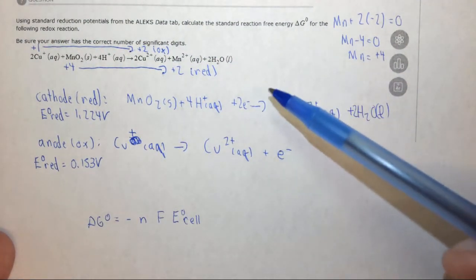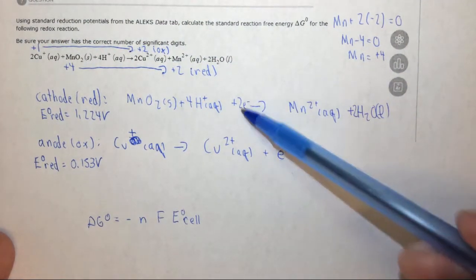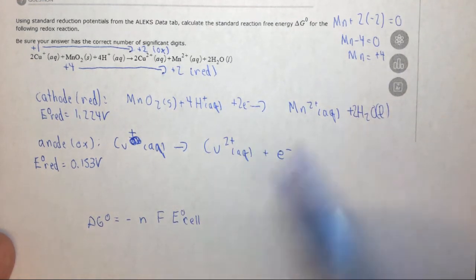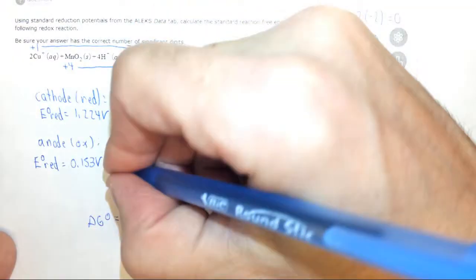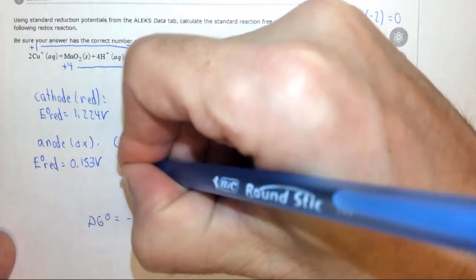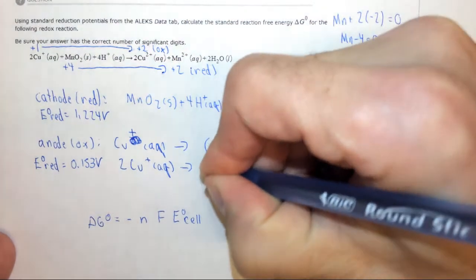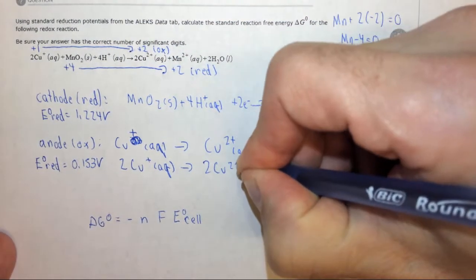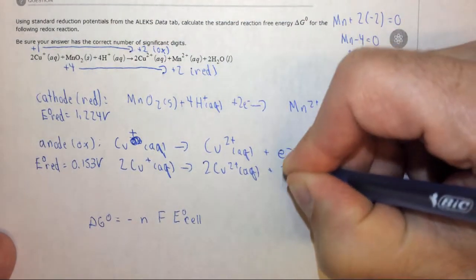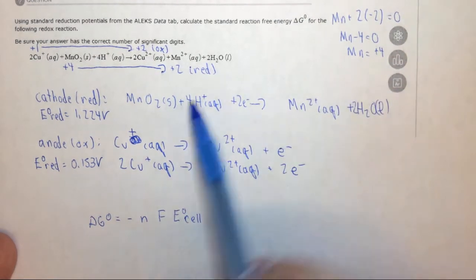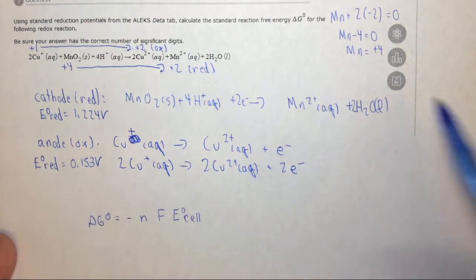But you'll notice, in order to have the overall reaction work, we need to cancel out the electrons. So if we have two electrons here, we need to have two electrons here. Said another way, we need to double everything. So we have 2Cu+ aqueous yields 2Cu2+ aqueous plus two electrons. And now if you go through the process of adding these two reactions together, you will get this overall reaction.